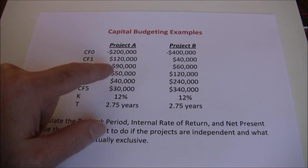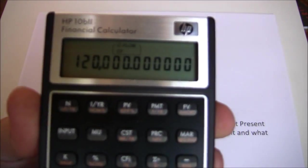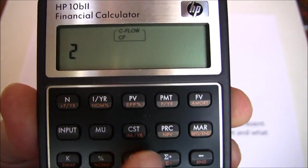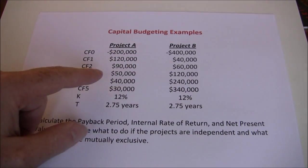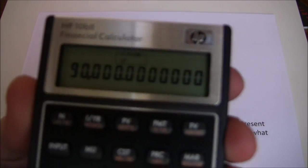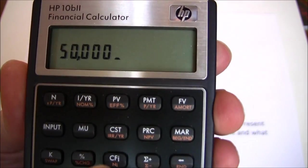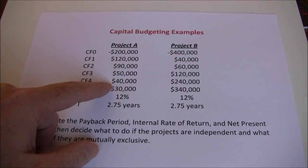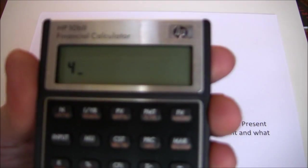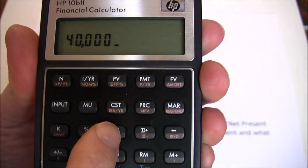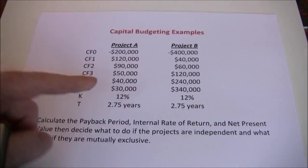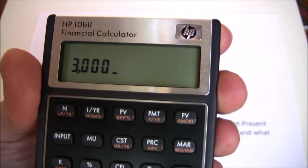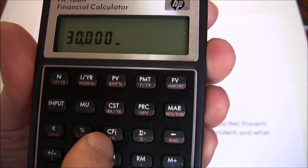Go straight to our next cash flow of 90,000, put that into CFJ. Next, 50,000, CFJ. Then 40,000, CFJ. And lastly, 30,000, CFJ.